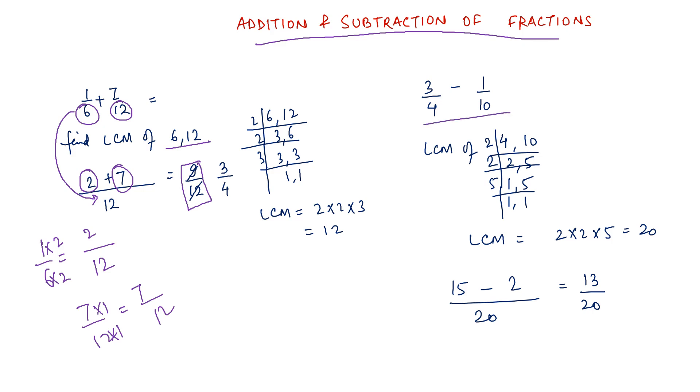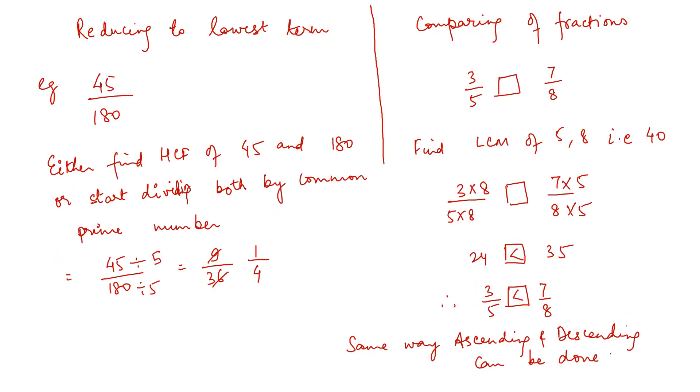Same way for the subtraction also you will find the LCM. Now here the LCM is 20. So 3 by 4 needs to be changed to a new fraction whose denominator is 20. Now how are you going to change 4 to 20? 4 into 5 is 20. So 3 into 5 is 15. That's how you got a 15. So 15 minus 2 is 13 by 20.